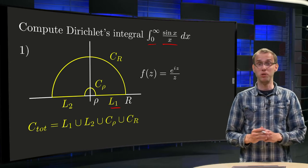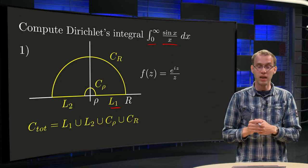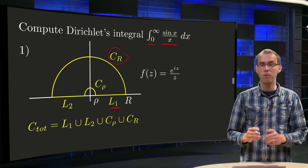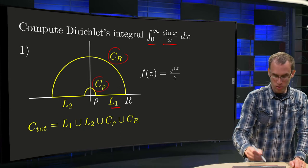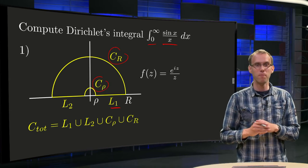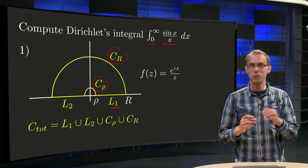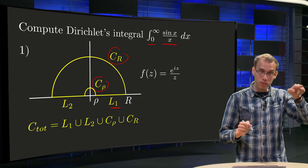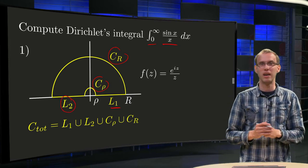Of course we need to include L1 because we want to eventually go from 0 to infinity. We have to close, so we have to start with some CR. But how are we going to close? Well, we need to go around the origin, so we need some c_rho. And then we have to think a bit ahead. Now we use something quite tricky. We are going to take a semicircle and we are going to include L2 as well.